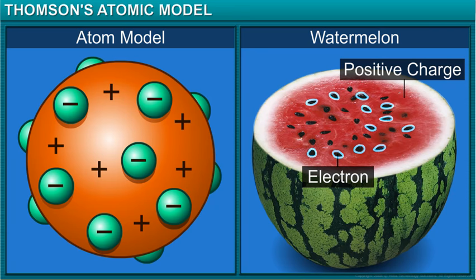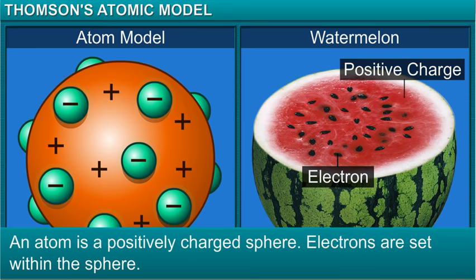The oppositely charged particles are held together by electrical force of attraction. Thomson concluded that an atom consists of a positively charged sphere with electrons set within the sphere.